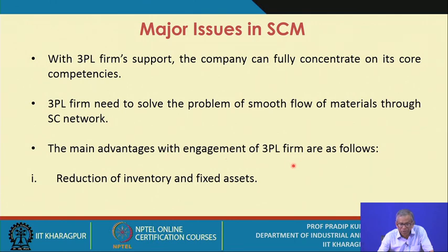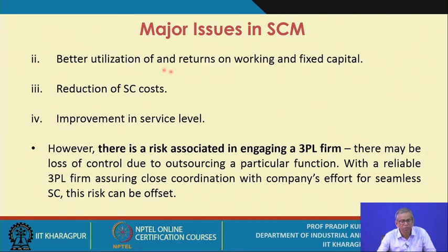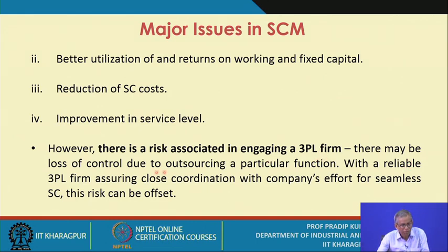The 3PL firm needs to solve the problem of smooth flow of materials through the supply chain network. The main advantages of engaging a 3PL firm include reduction of inventory and fixed assets, greater utilization and returns on working and fixed capital, reduction of supply chain costs, and improvement in service level. However, there is a risk: there may be loss of control due to outsourcing a particular function, meaning you lose control on materials management. With a reliable 3PL firm assuring close coordination with the company's efforts for a seamless supply chain, this risk can be offset.